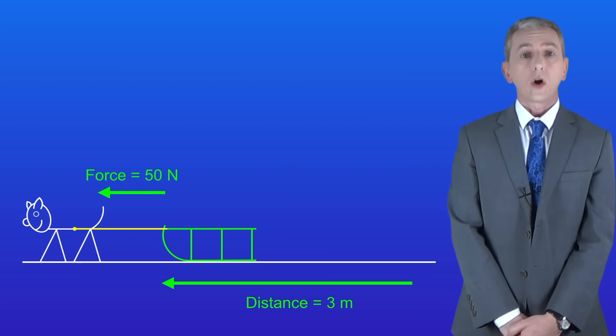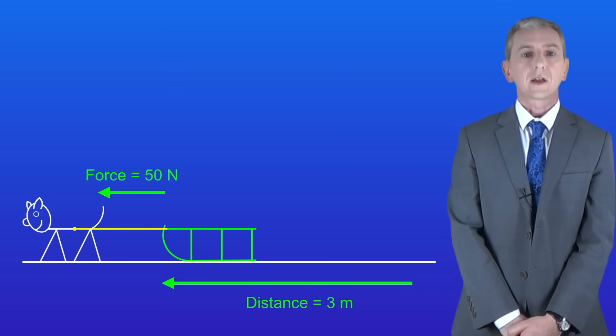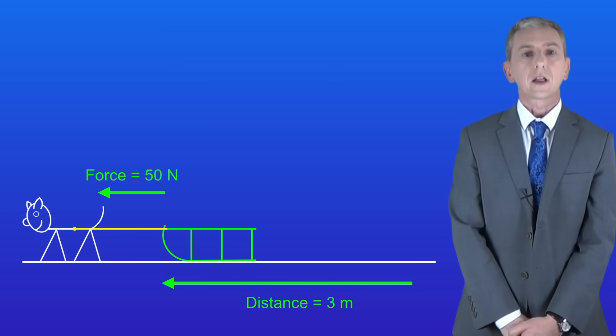Looking at this example we can see that the dog is applying a force of 50 newtons and the sledge is moving a distance of three meters. So how do we calculate the work done?